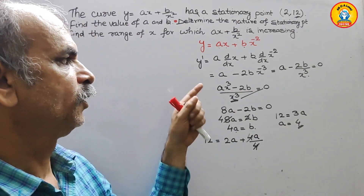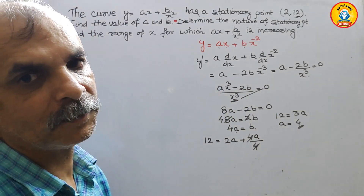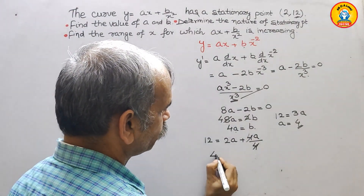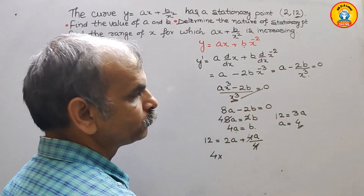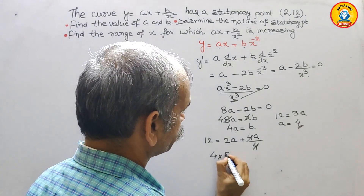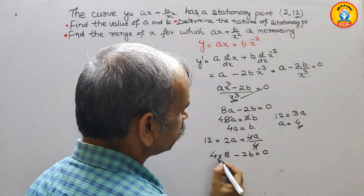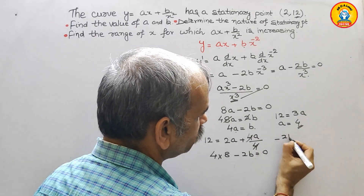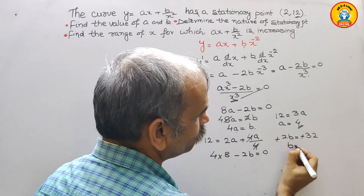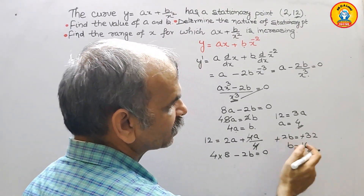Next, we substitute a equals 4 back to find b. We get 4 times x cubed equals 4 times 8 equals 32, so 32 minus 2b equals 0, giving minus 2b equals minus 32. Therefore b equals 32 divided by 2, which is 16. So we have found b equals 16.